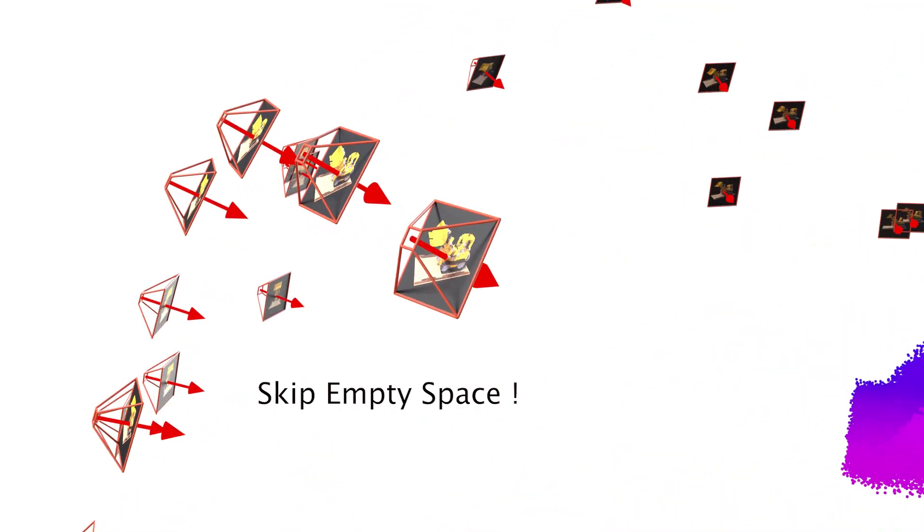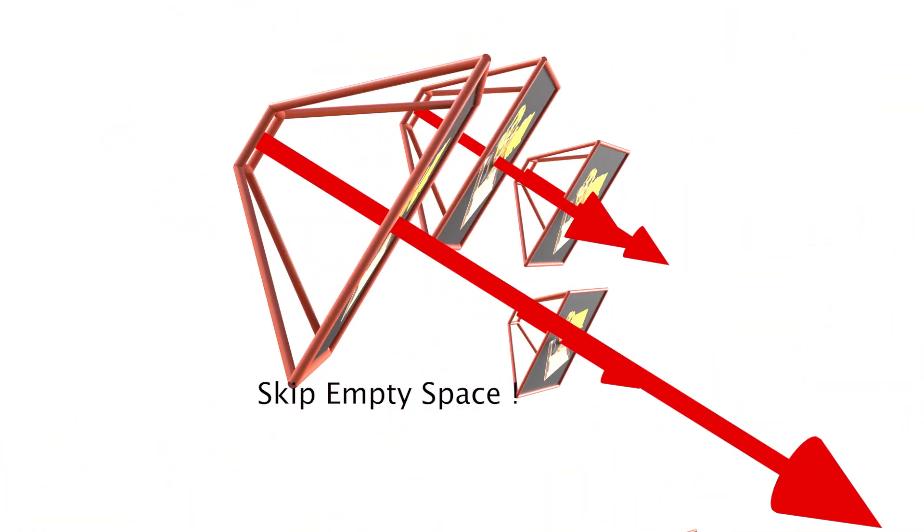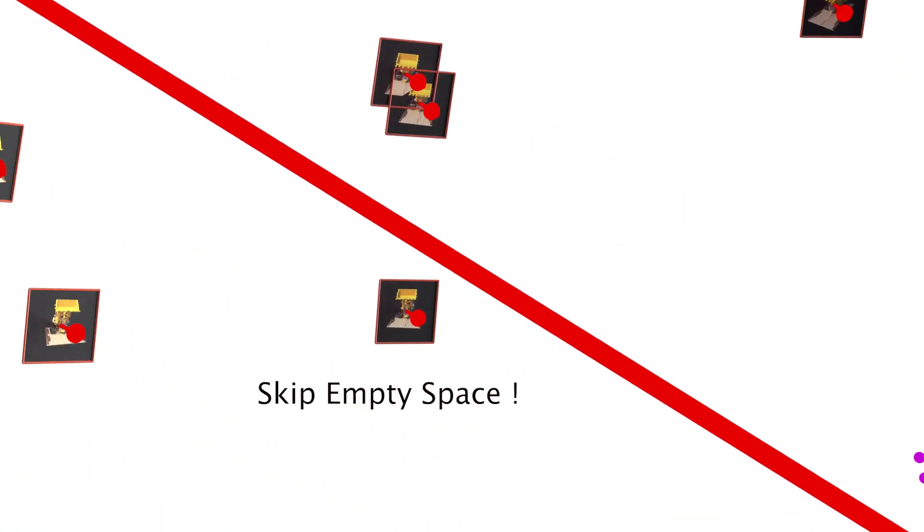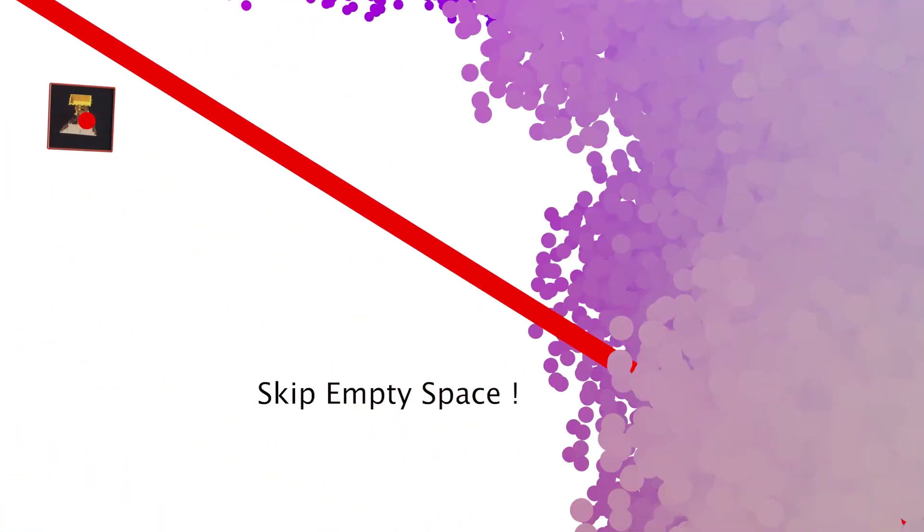During ray marching, PointNRF skips all the empty regions and only computes shading near the geometric prior. This efficient sampling strategy differentiates PointNRF from previous NRF models.